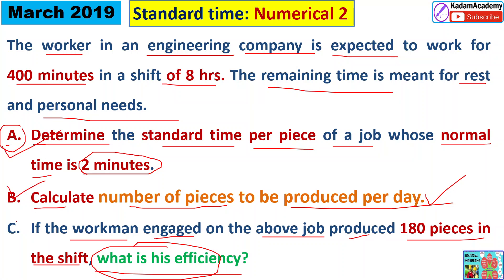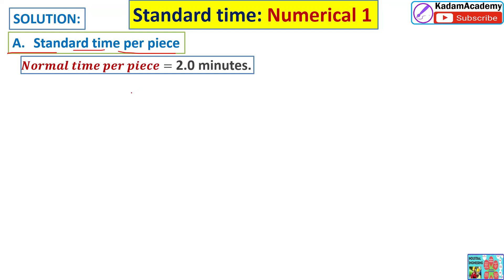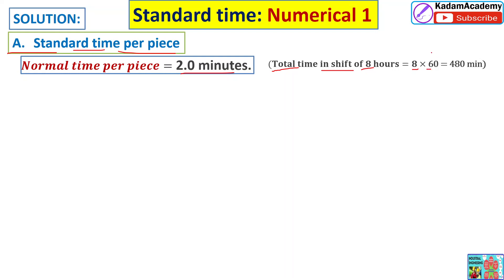We start with part A: finding the standard time per piece. Normal time per piece is given as two minutes. Total time in one shift is eight hours, which equals eight into sixty, giving us 480 minutes per shift.